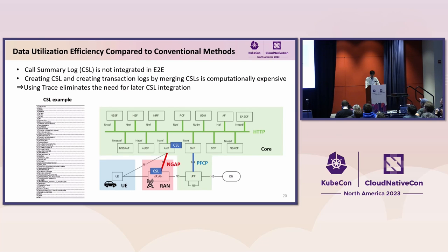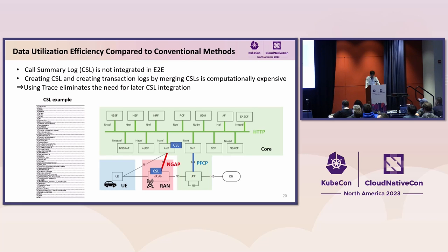The mobile network outputs the processing of a single transaction as a call summary log. A call summary log is generated each time the user equipment disconnects and sent to the backend data lake — timing of disconnection includes power-off and handover. The call summary logs are separated at each network function and merged at the backend in batch processing every few minutes, which is taking too long. By including the required information as an attribute in the span, complete end-to-end logs can be obtained in real-time compared to the current method using call summary logs.